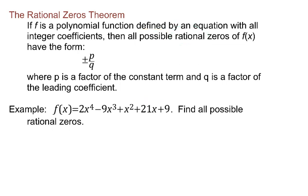So we're going to get from this theorem a list of what only the rational zeros might be. That probably sounds like it isn't going to give much, but it's actually very useful. All possible rational zeros have a certain form: plus or minus p over q. Where p is a factor of the constant term, and q is a factor of the leading coefficient.